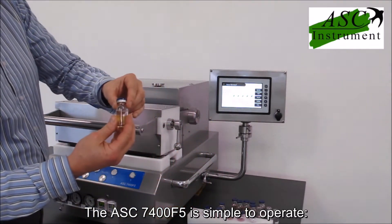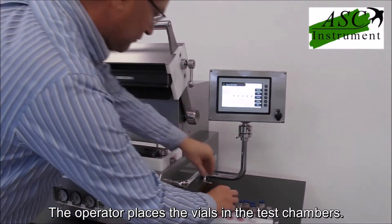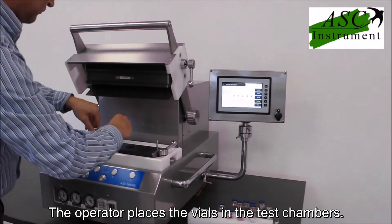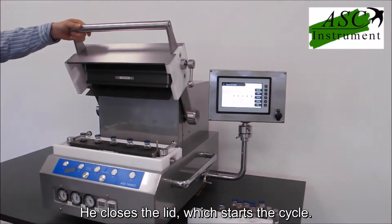The ASC7400F5 is simple to operate. The operator places the vials in the test chambers, closes the lid, which starts the cycle.